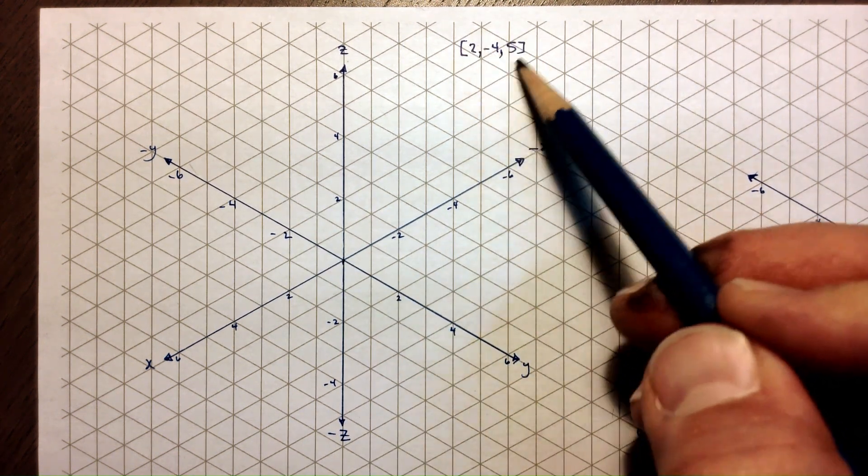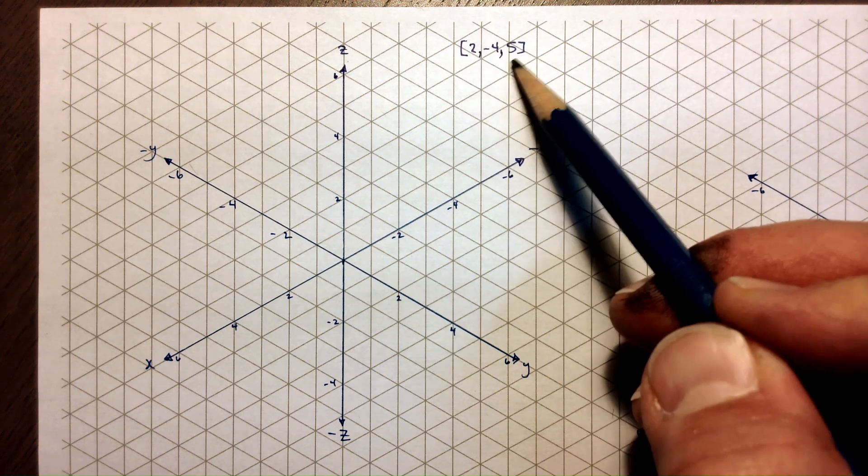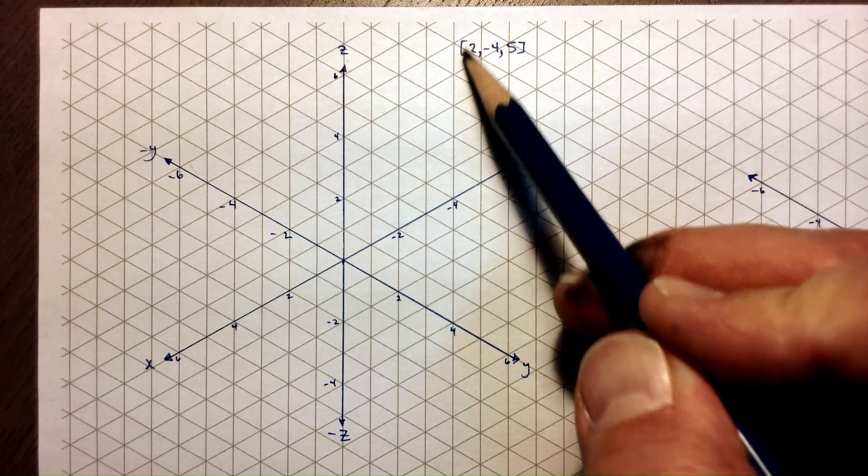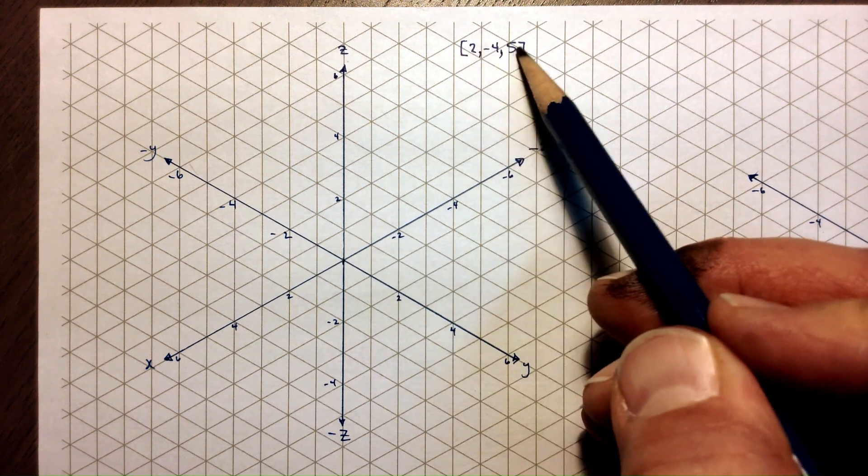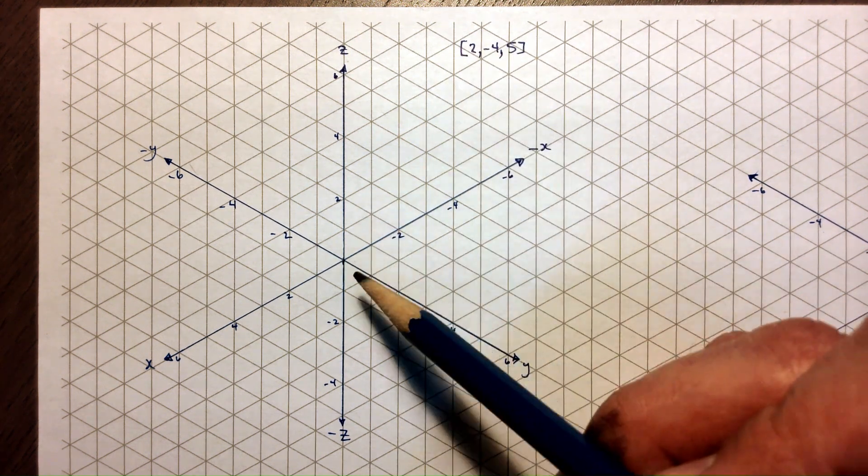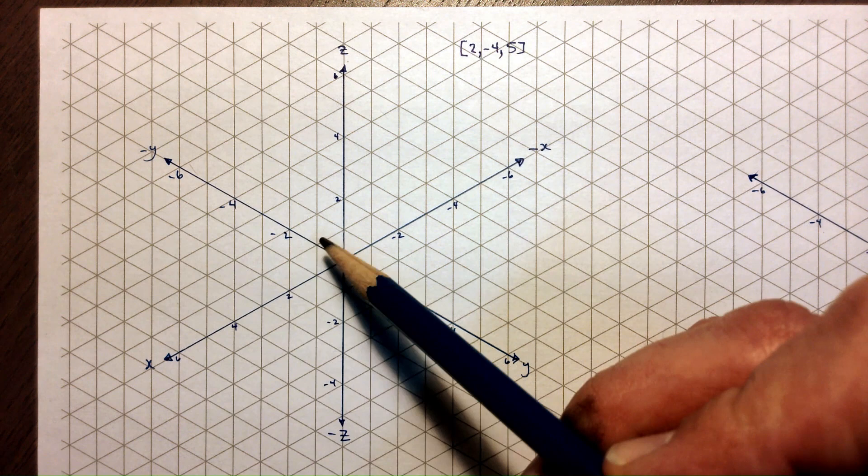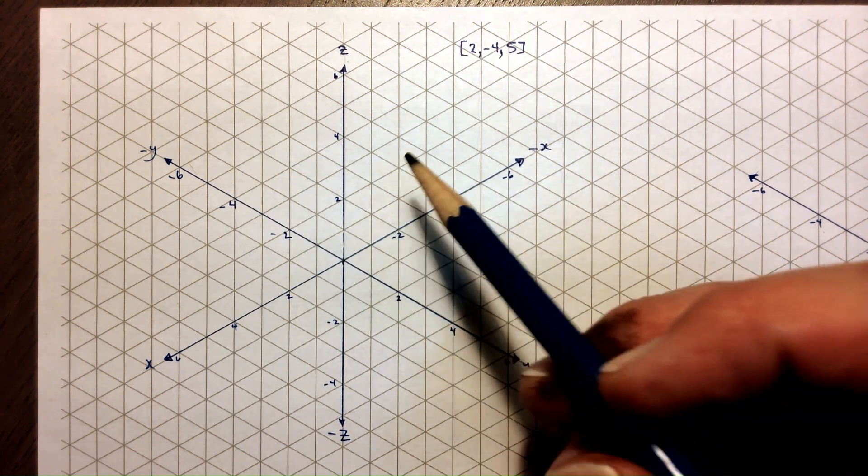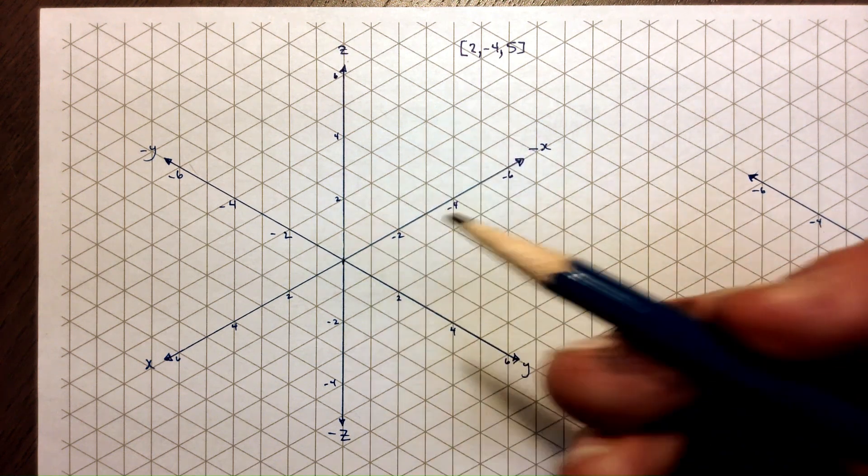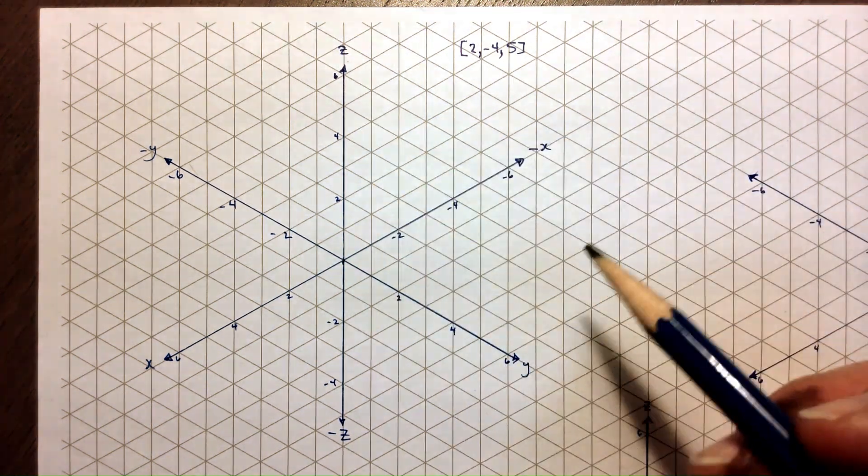So to plot this vector, we're going to plot the point from (0, 0, 0) out to (2, -4, 5). And then we're going to draw a prism that helps you to see where this is in space. Because if you just draw a vector, it's hard to know is it kind of pointing out of the page or into the page.